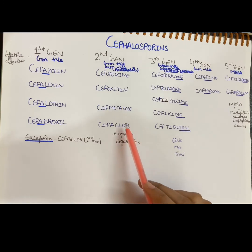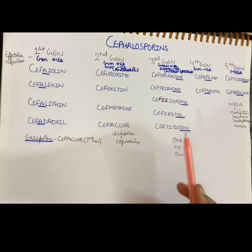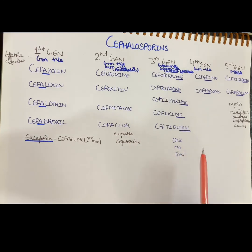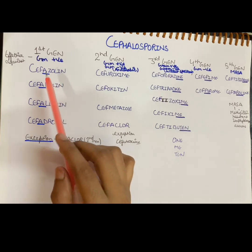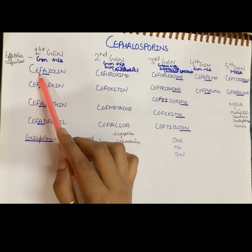There is an exception: Cefoxitin, where 'M' comes after Ceph but this belongs to the second generation. Everything else not covered by the other mnemonics also belongs to the second generation.